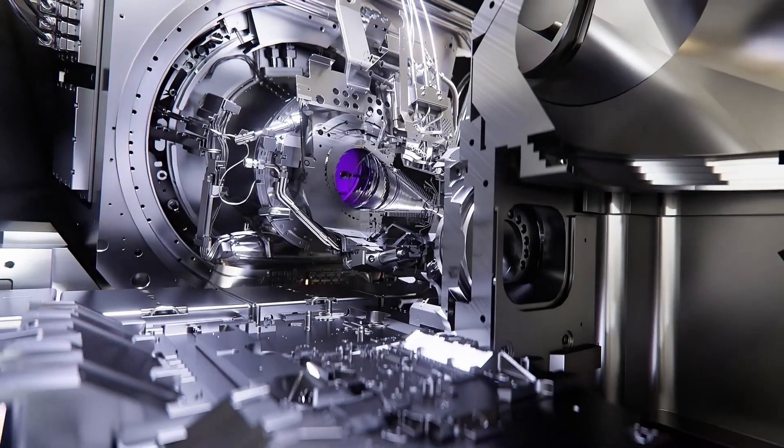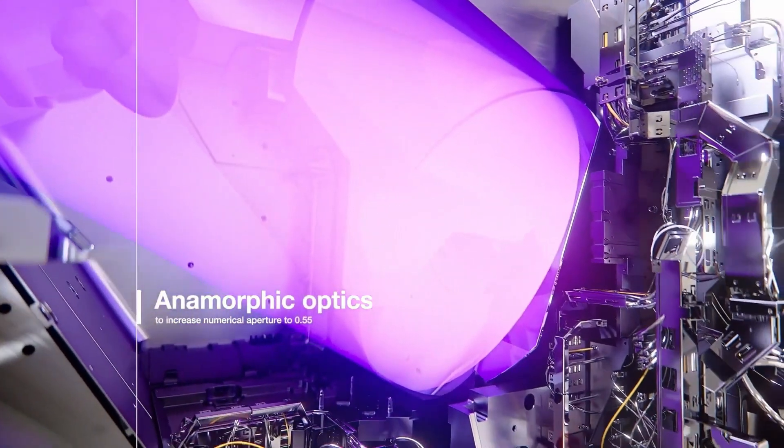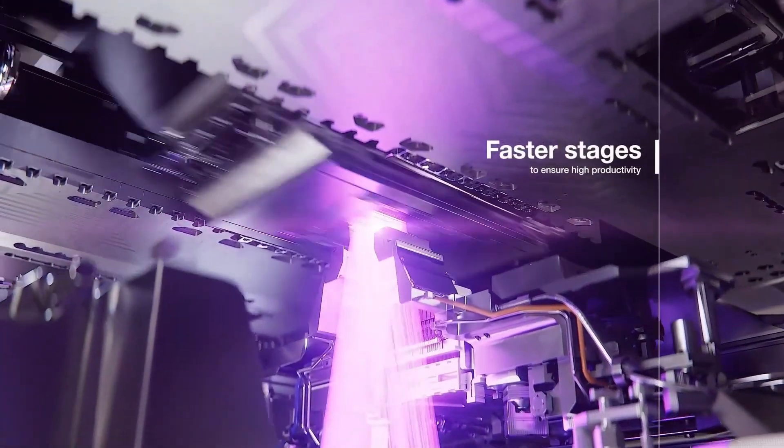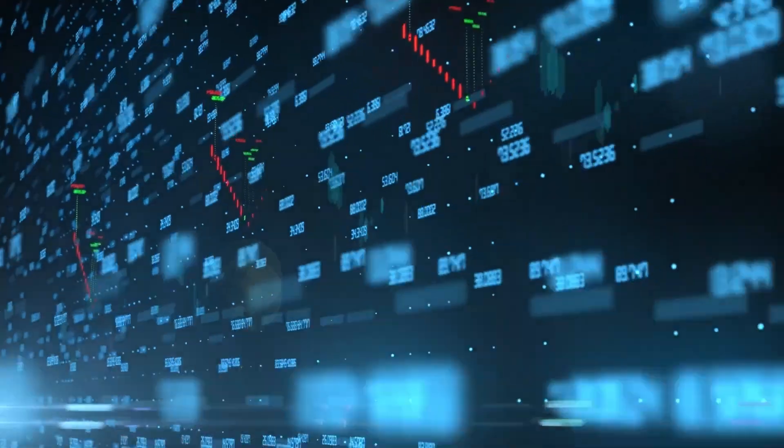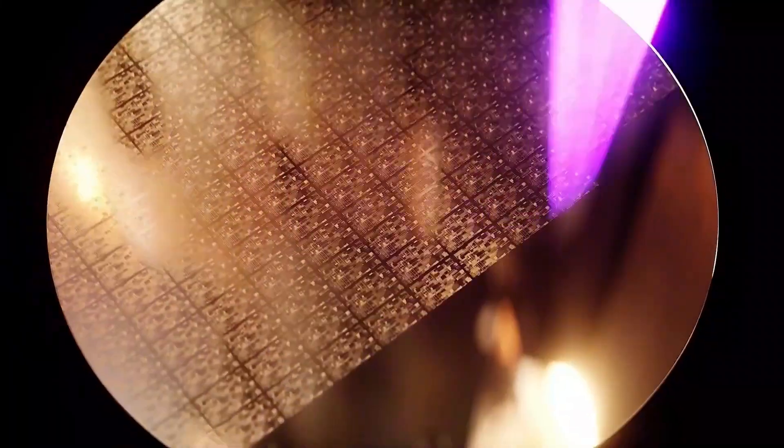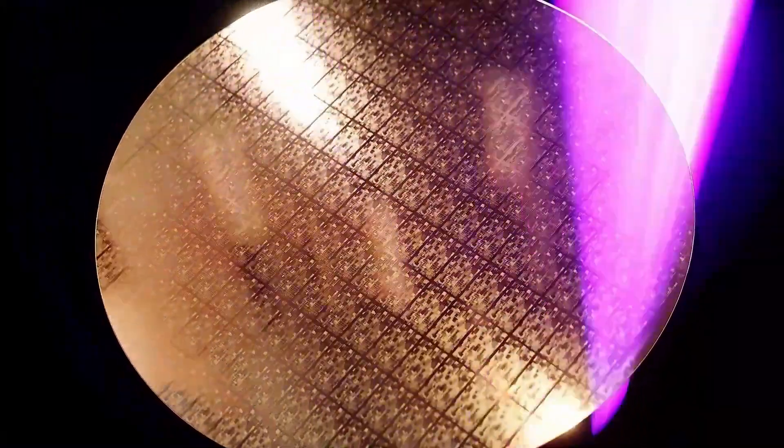China's prototype currently produces 70mW of UV power, 6000 pulses per second, and a very narrow wavelength width, which is required for precise chip printing. While these numbers are far from commercial levels, they are enough to prove that China is on the right track.